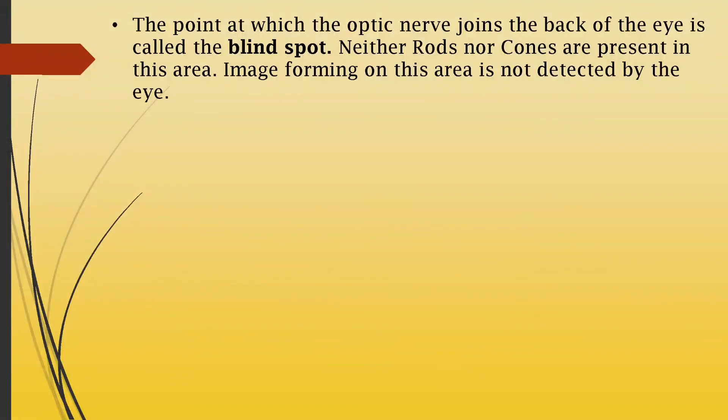When light falls on the retina, rods and cones generate an electrical impulse which travels to the brain through the optic nerve, and the brain then interprets the image. The point at which the optic nerve connects the retina is called the blind spot. There are no rods and cones in the blind spot, so we cannot see the image forming there. But since we have two eyes, it is impossible for the image to be formed at the blind spots of both eyes at the same time, which is why it is not very evident.